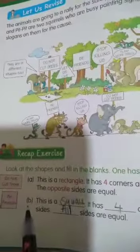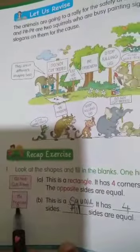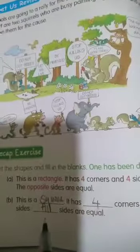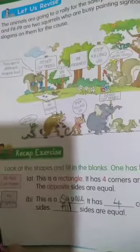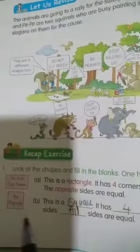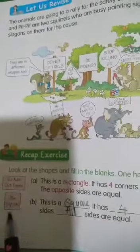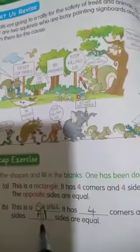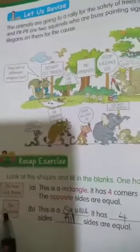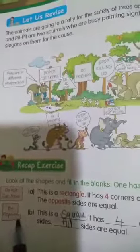Next one, B — this is a square. It has 4 corners: 1, 2, 3, 4, and 4 sides: 1, 2, 3, 4. All sides are equal.